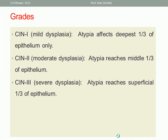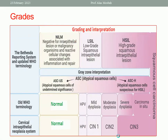We have three grades: CIN1, CIN2, and CIN3. CIN1, previously called mild dysplasia — atypical cells affect the deepest third of the epithelium only. CIN2, moderate dysplasia — atypia reaches the middle third of the epithelium. CIN3, severe dysplasia — atypia reaches the superficial third of the epithelium. You can look at the grades here, showing different types according to the epithelial system published by WHO, and the grading according to CIN1, 2, and 3.